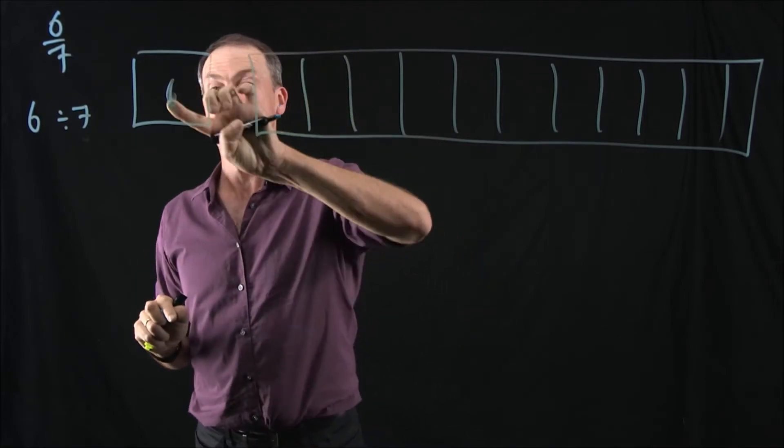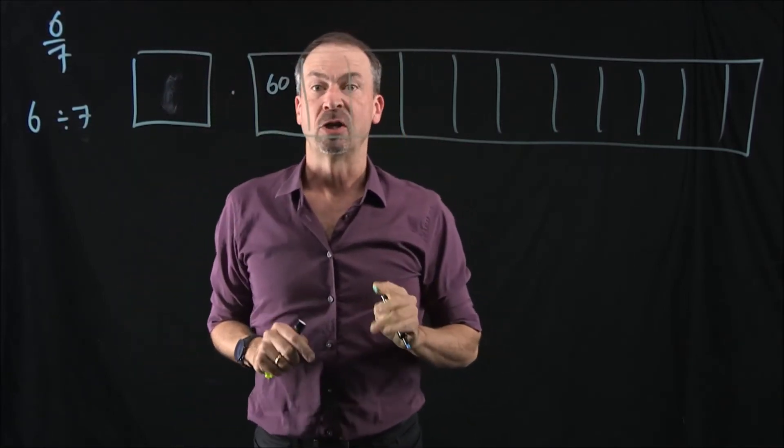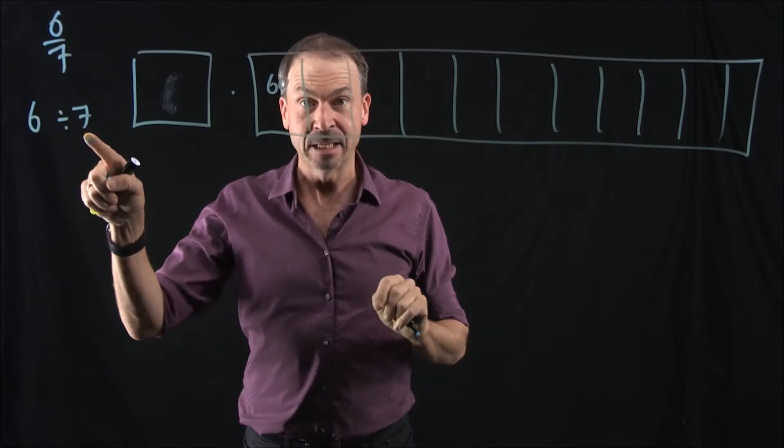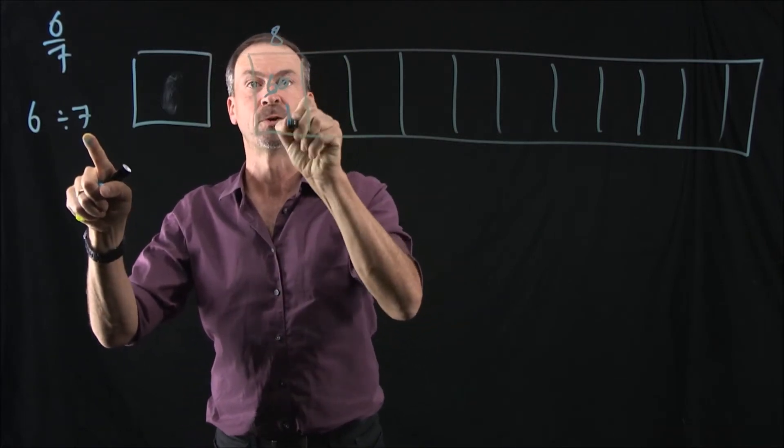We'll unexplode. So unexplode 6 times, we'll make 60 dots there. Now the question, do I find any 7s amongst 60? You bet. I'd find 8 sevens amongst that. So I guess I get 8 groups of 7, that's 56, leaving 4 dots behind.